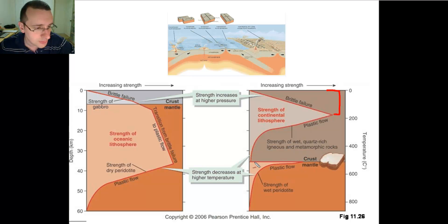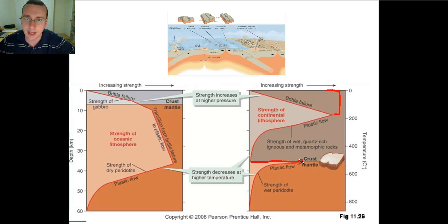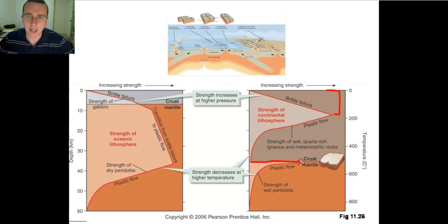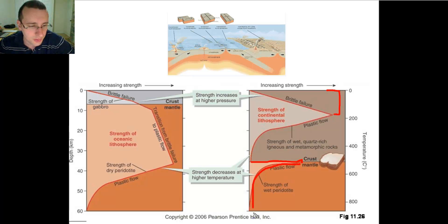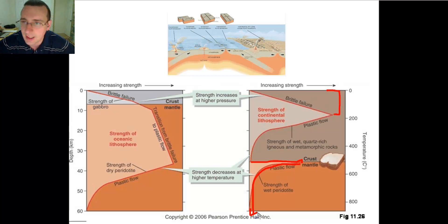Then you hit the Moho discontinuity and you see a sharp increase in the density and toughness of the rock. The rocks start to become a little more brittle again, but there still tends to be plastic flow. As you are in the upper mantle, which is still part of the lithosphere, plastic flow returns and becomes more and more dominant as you approach the asthenosphere, which is hotter and hotter, making the rock increasingly plastic.